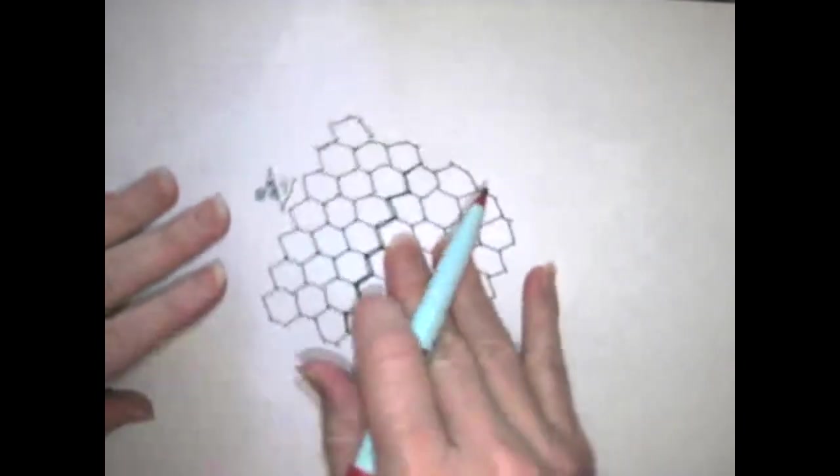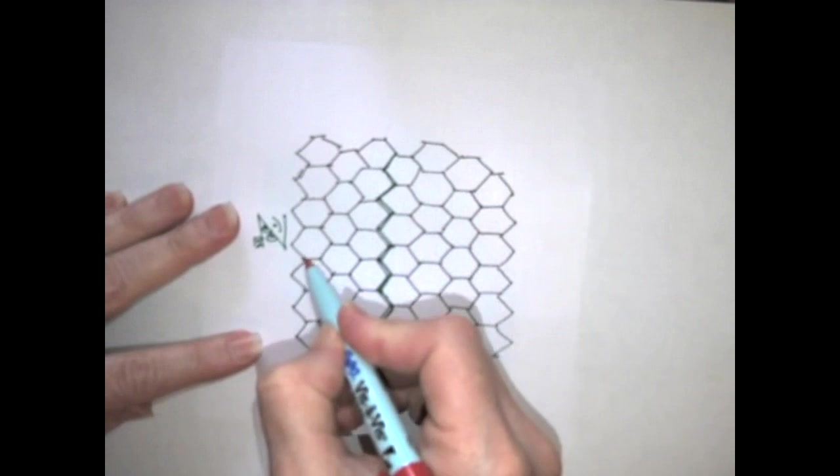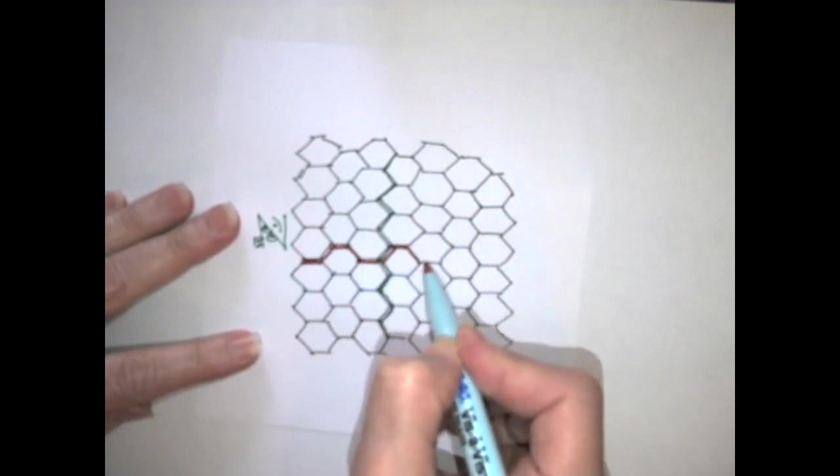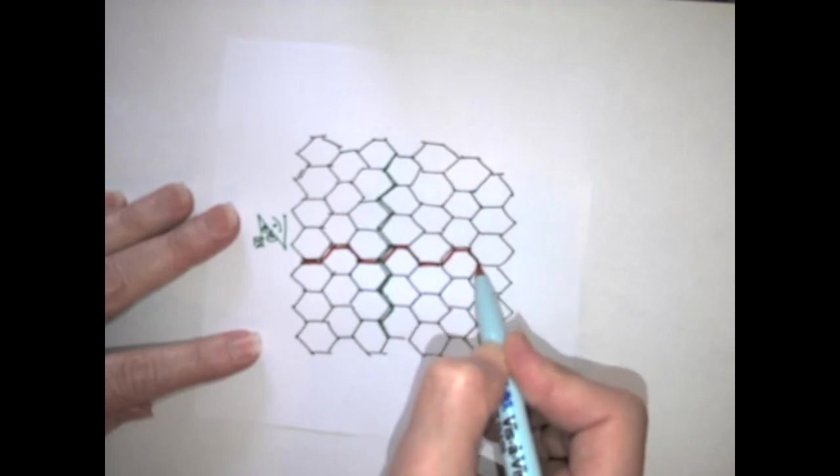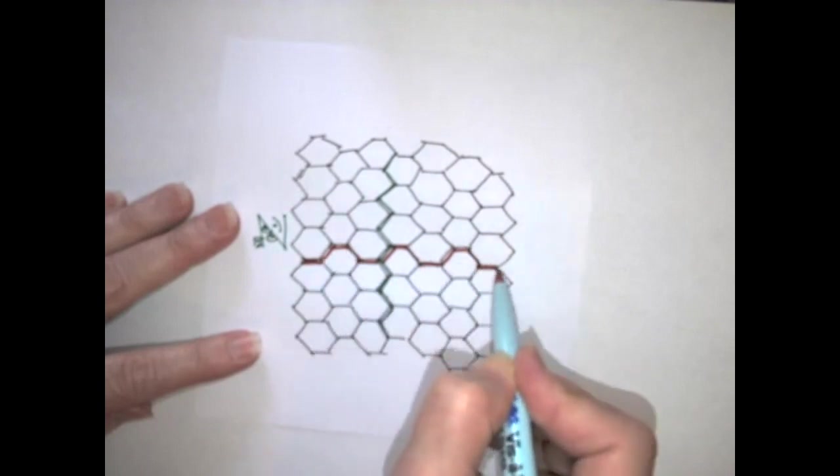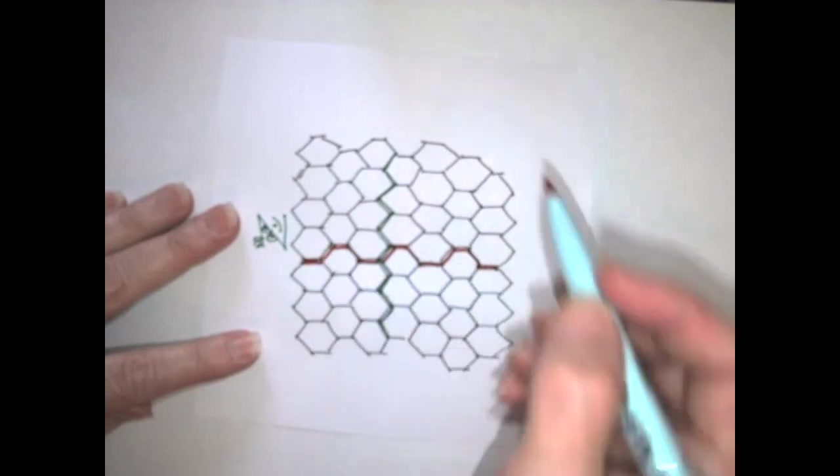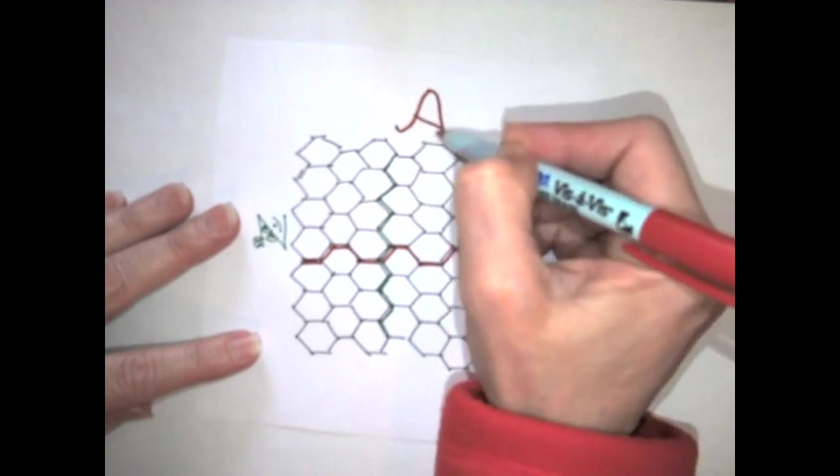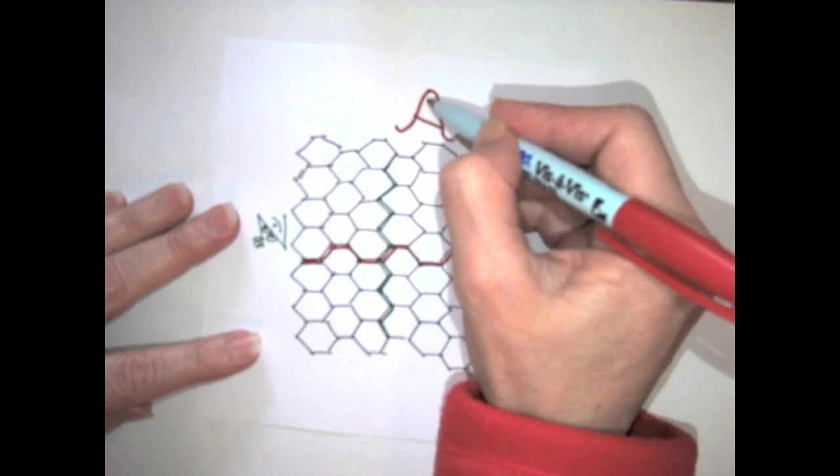If I rotate the carbon nanotube sheet, I notice that there's a different pattern in this direction. It's not a zigzag anymore. Scientists call it an armchair pattern. So this armchair pattern that's going across here is going to help me make a different carbon nanotube.